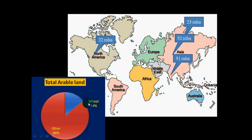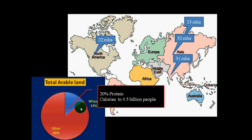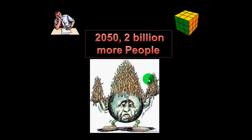We have 14% of the total arable land, and this 14% of total arable land is contributing 30% protein and calories to 4.5 billion people across the world. In the future, it will be very tough to supply food to 2 billion extra people by 2050.